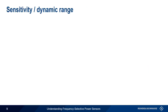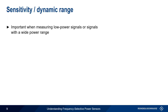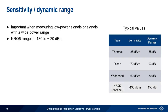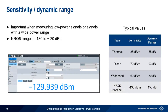Sensitivity and dynamic range are important when measuring low power signals, or signals with a wide range of possible powers. In particular, traditional power sensors have difficulty measuring very low power signals. A receiver-based power sensor, such as the NRQ6, can measure signals in the range of −130 to +20 dBm, giving it a dynamic range of 150 dB. This is clearly superior to the other types of power sensors.